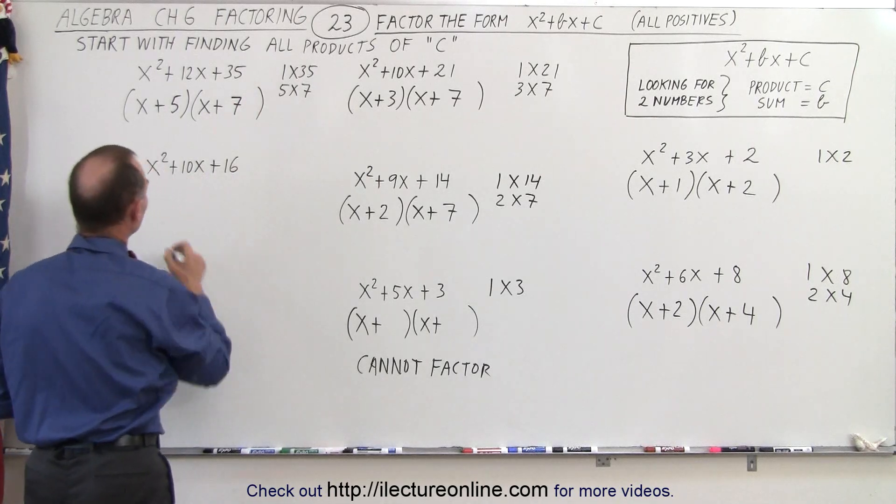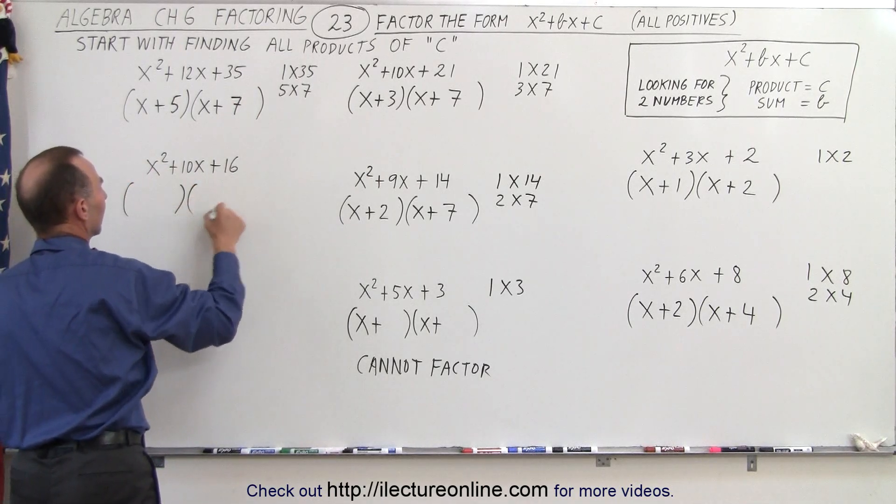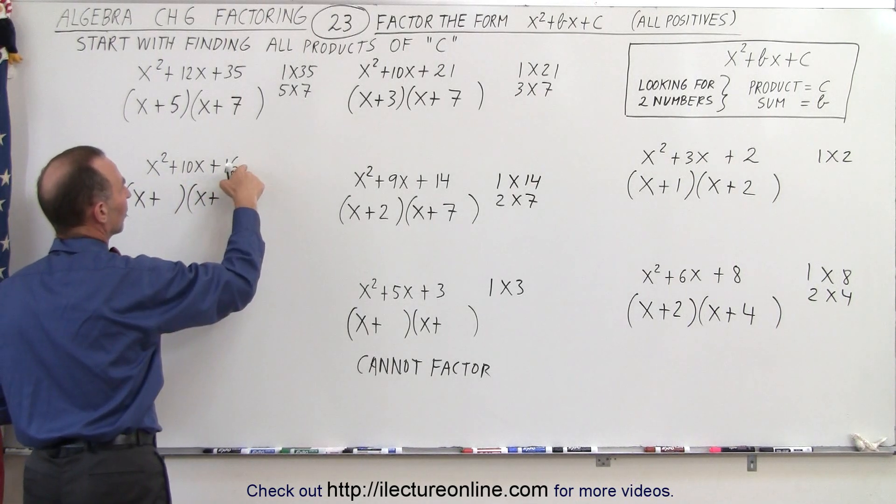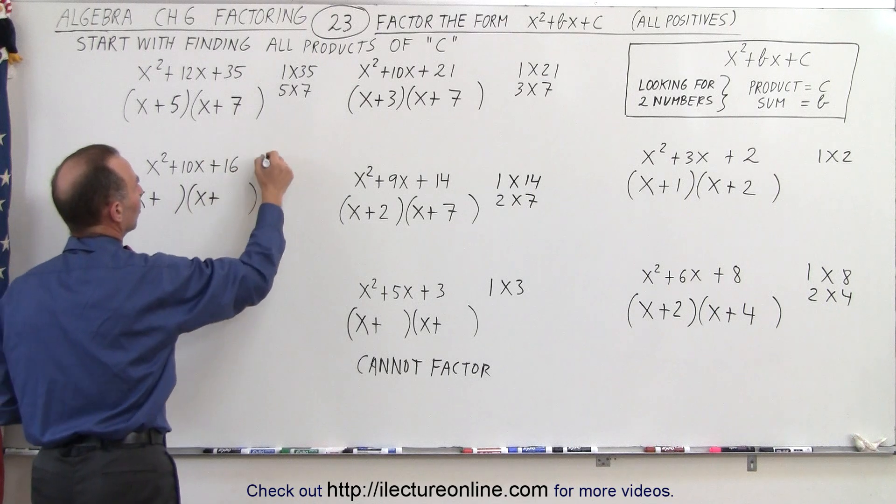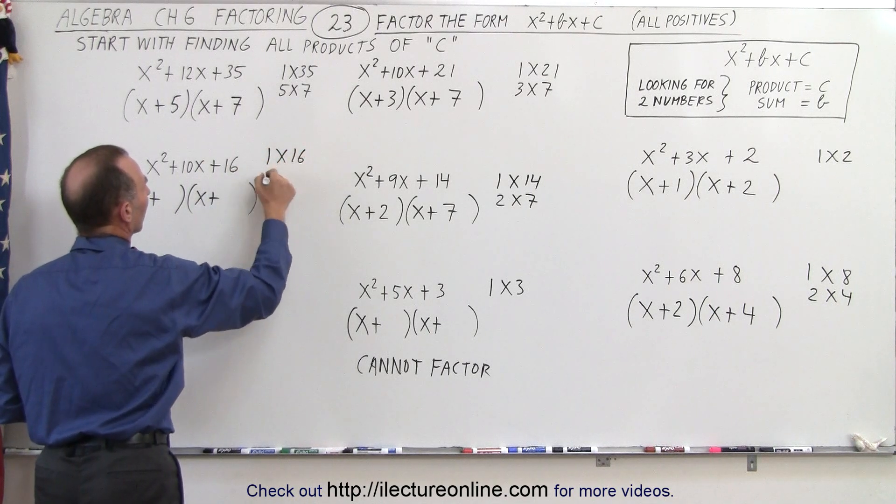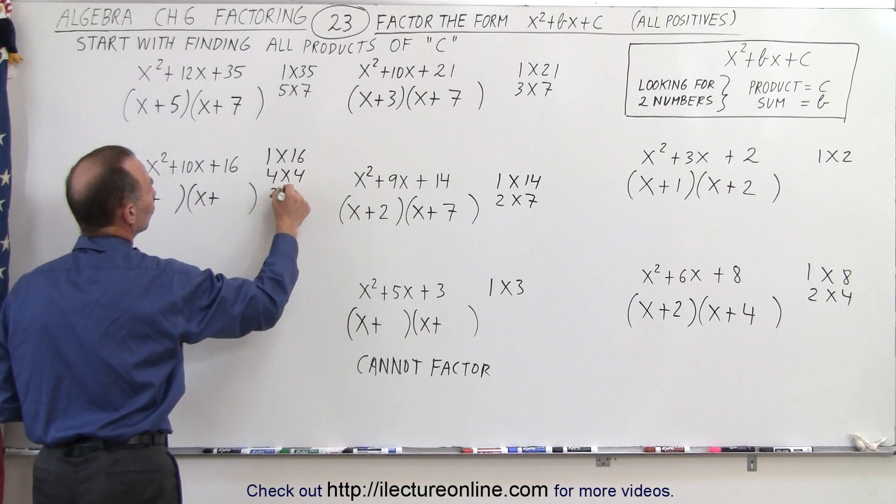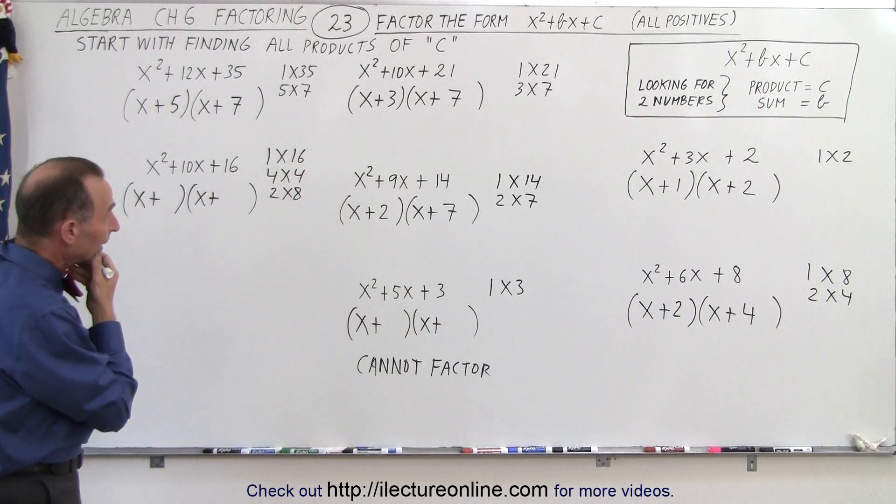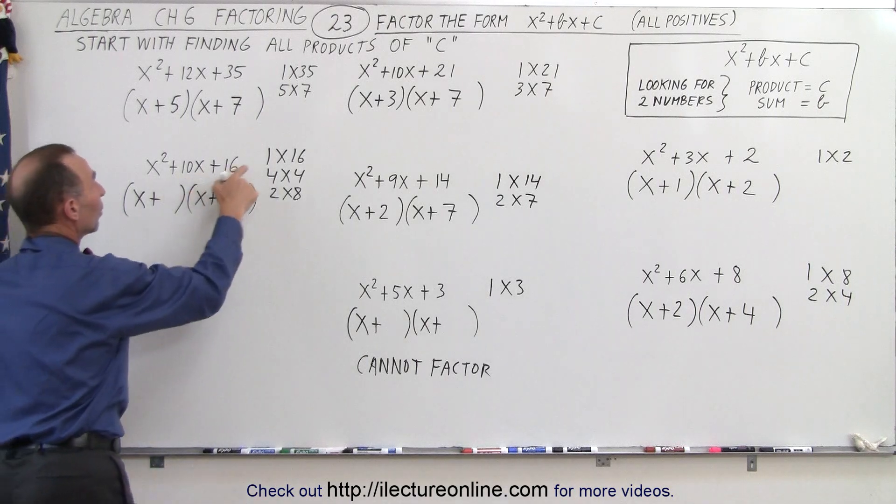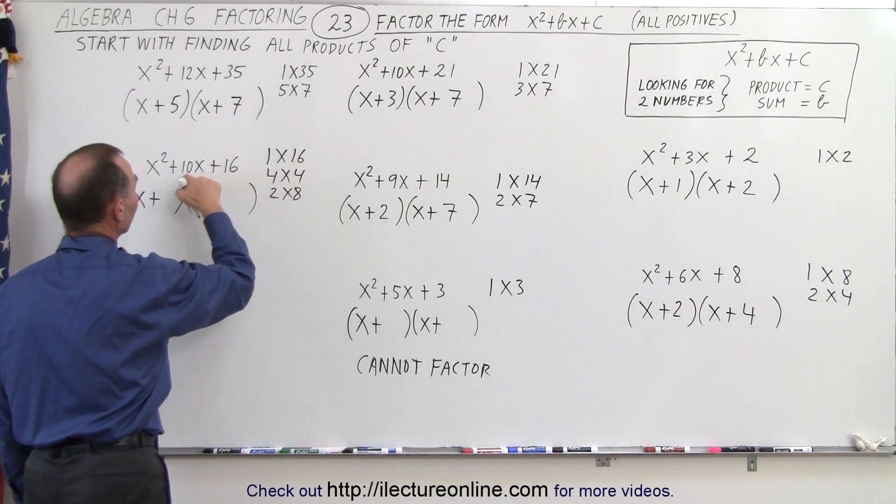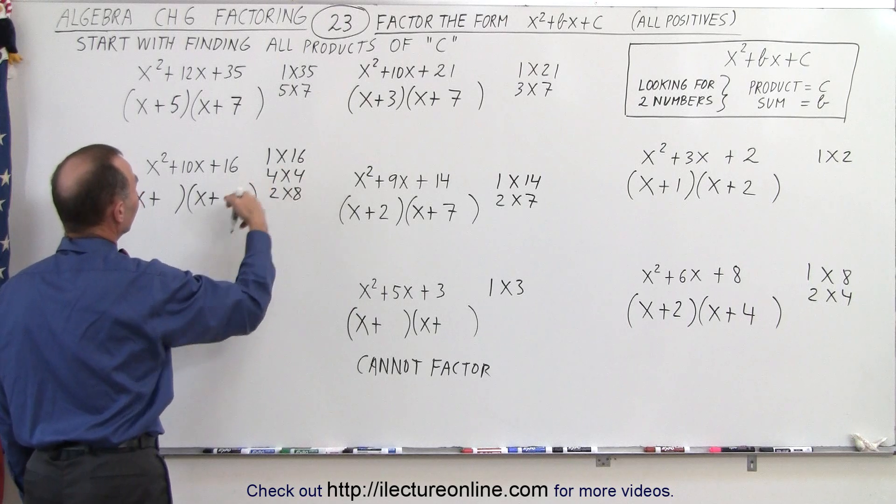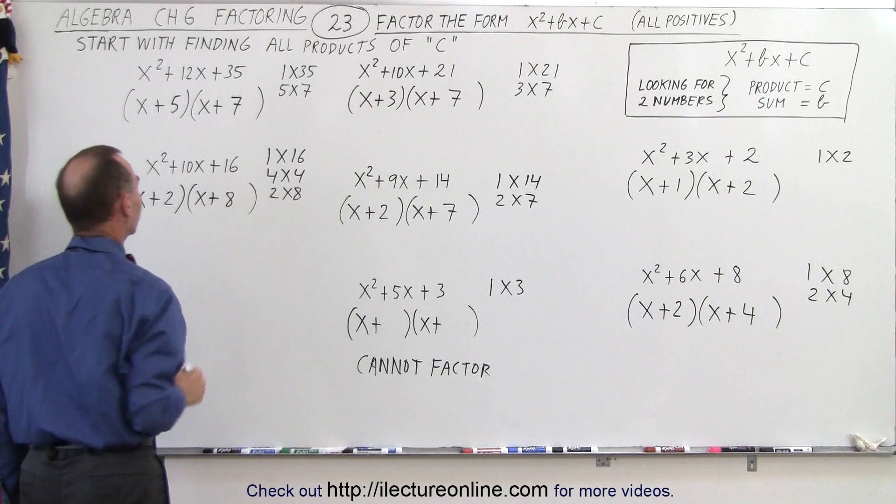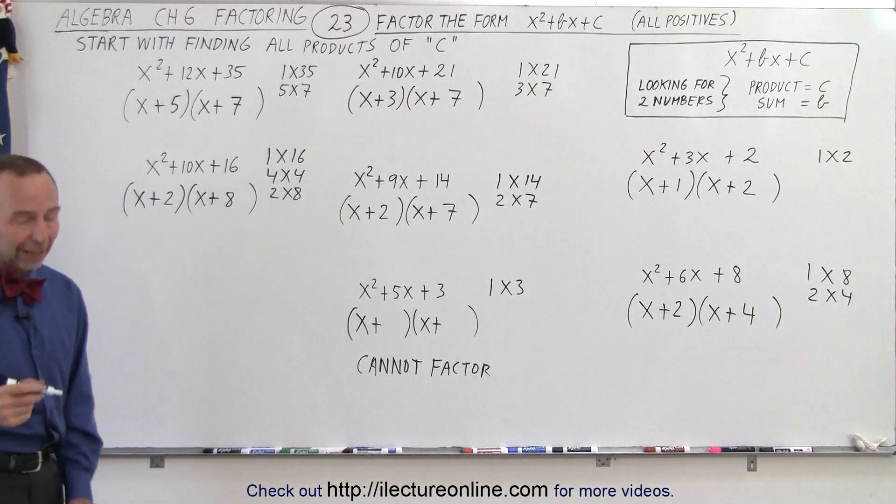And finally, here with the final example. Again, we get x plus, x plus. The product of two numbers that gives us 16 would be 1 times 16, 4 times 4, and 2 times 8. So in this case, there's three possibilities. Now, which of those two numbers added together gives us 10? Well, 1 plus 16 is 17. That's not it. 4 plus 4 is 8. That's not it. But 2 plus 8 is 10. That is it. So the proper factor form would be x plus 2 and x plus 8.